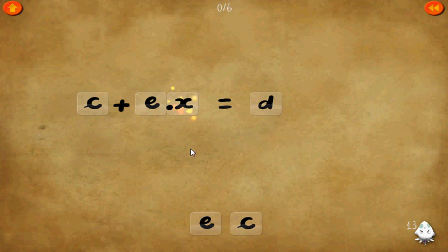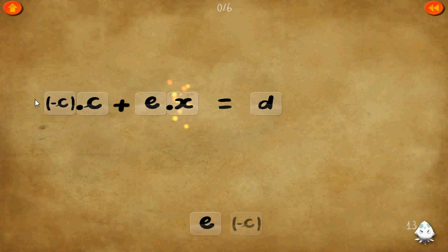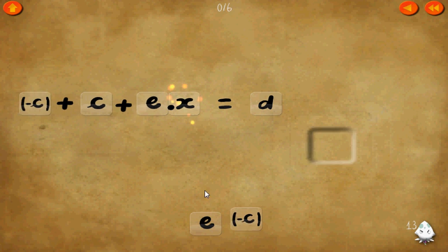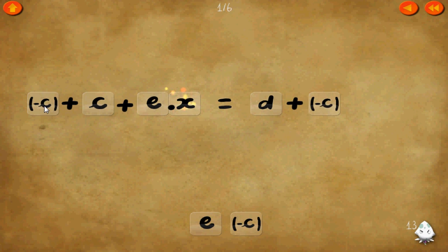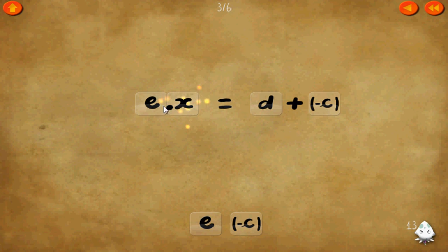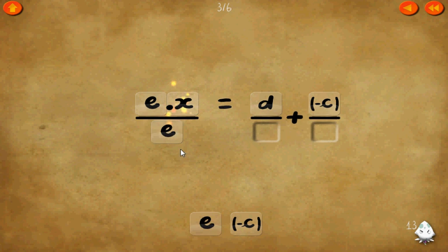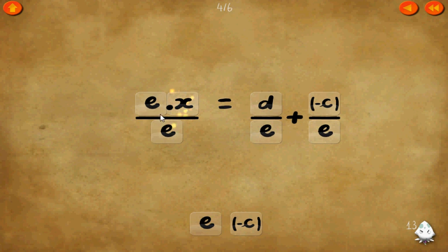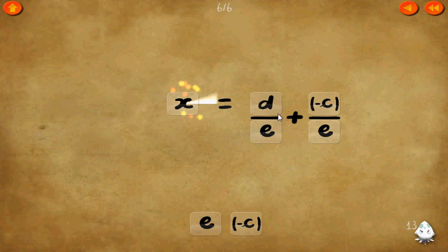Level 13. c plus e times x equals d. Let's get rid of c first by adding negative c on each side — negative c plus c equals 0. Now divide both sides by e, making it a common denominator, which means we can cancel the two e's. 1 times x equals x.